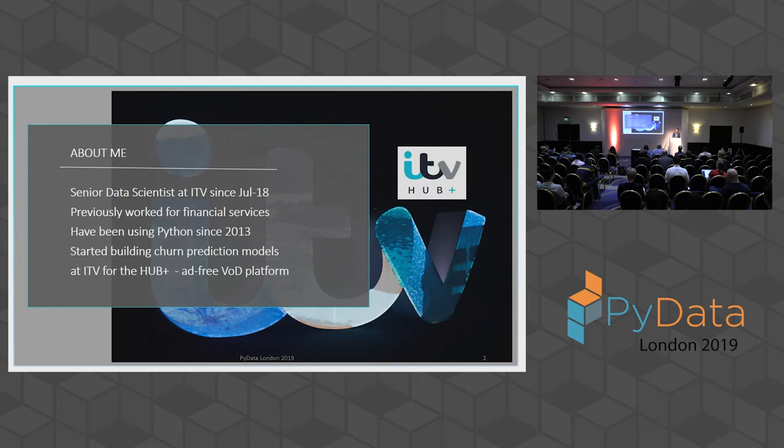Very briefly about me: I joined ITV last year, and it's at ITV that I actually started building client churn prediction models for ITV Hub Plus platform, which is an ad-free video on demand platform. ITV has a data science team of four data scientists and one intern, and we're actually looking for one more data scientist to join us.